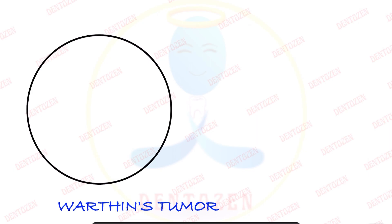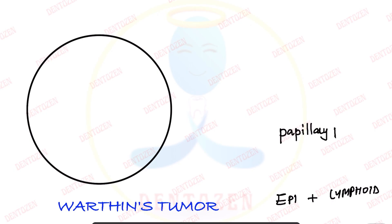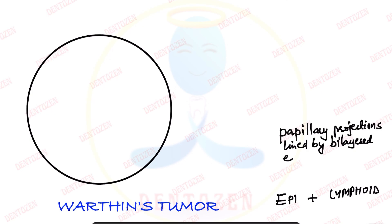This tumor has two components: an epithelial component and a lymphoid component. The epithelial component is in the form of papillary projections — that is, finger-like projections. This epithelial component is made up of two layers of epithelium, so the papillary projections are lined by a bilayer epithelium.